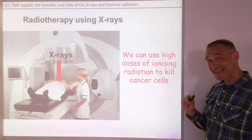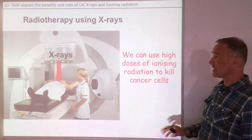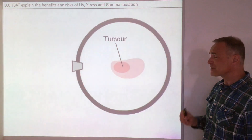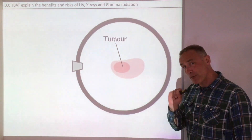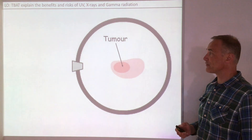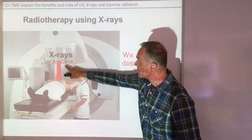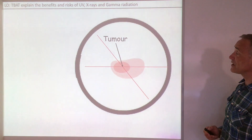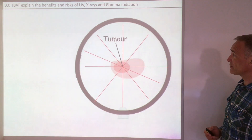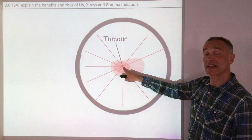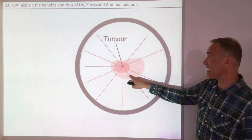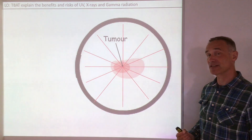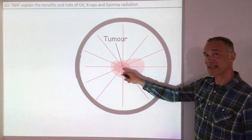We can also use x-rays for killing cancer cells if we use a high enough dose. The x-rays are produced and they pass through the body to the tumour. To make sure the tumour gets a very high dose but the healthy cells don't, they rotate the machine around the body. The x-rays are continually fired at different points, so the central point where the tumour is gets a high dose while the healthy cells around get a low dose. The risk of developing new cancers rather than treating the existing cancer is therefore very low.